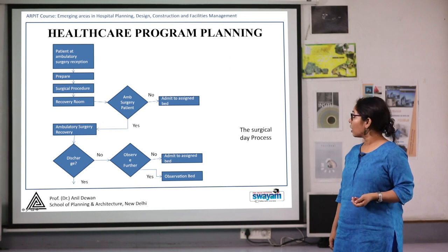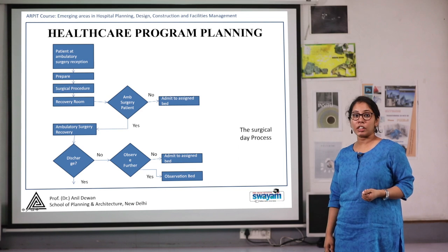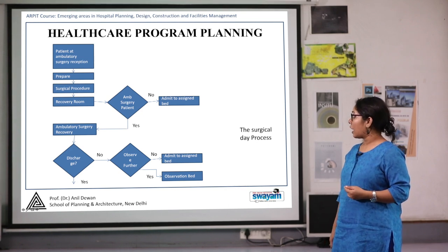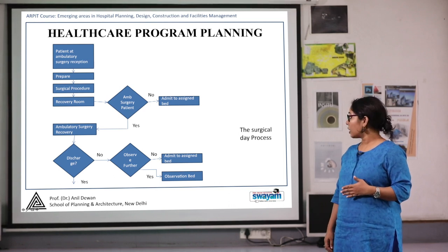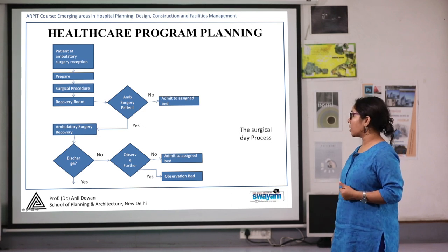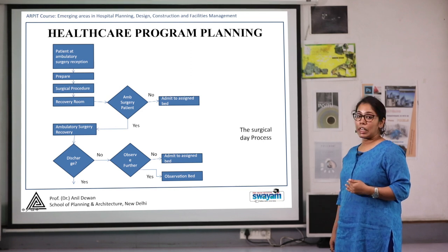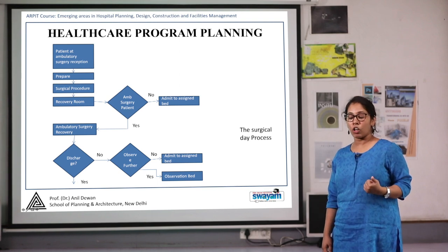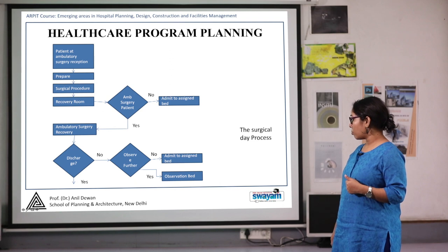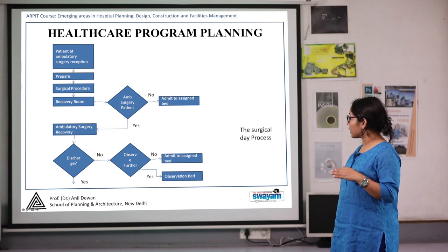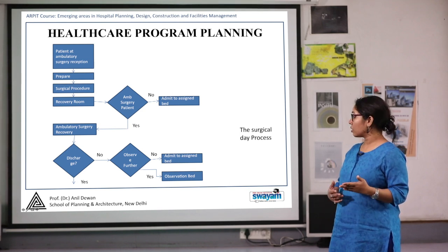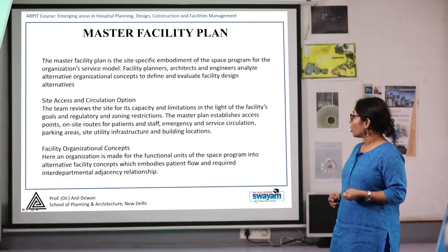Here is a flow diagram for a surgical day process. A patient arrives at ambulatory surgery reception, is prepared for the next procedure. If it is a surgical procedure, he is taken through it, and after the surgical process, he is taken to the recovery room. If admitted, the patient is taken to an assigned bed. If recovered, he goes to the ambulatory surgery recovery room. If discharge is possible, he exits the hospital; otherwise, he is taken to an observation bed for further observation. According to this flow, at various levels, facilities enable the patient's recovery.